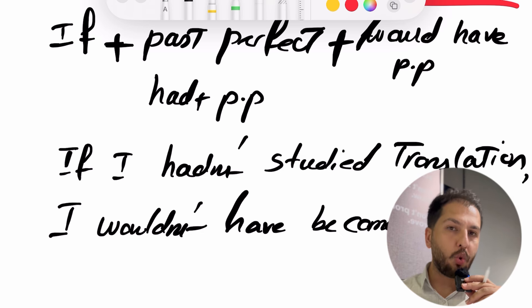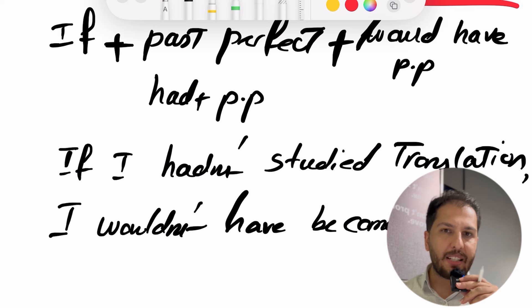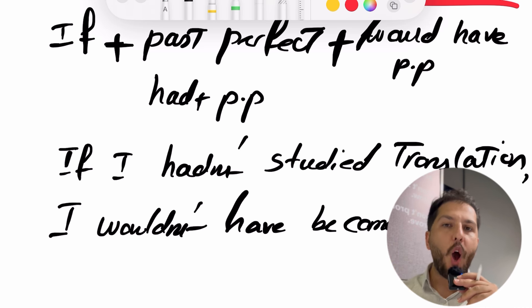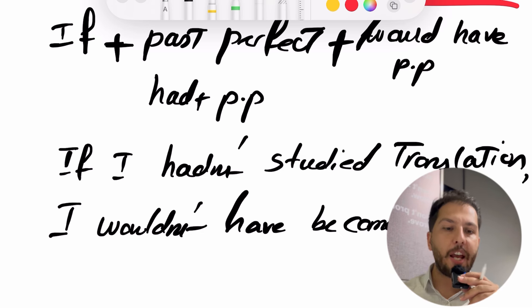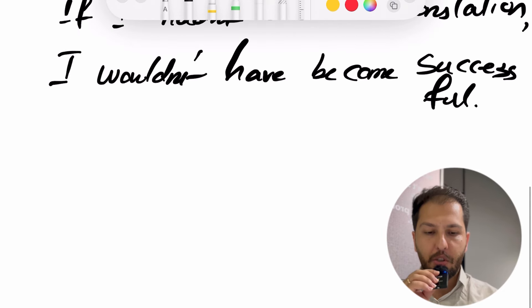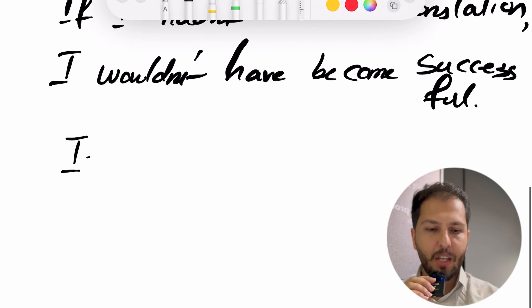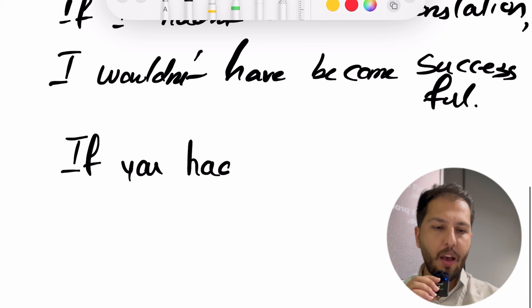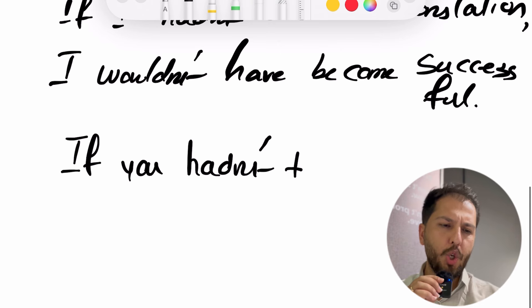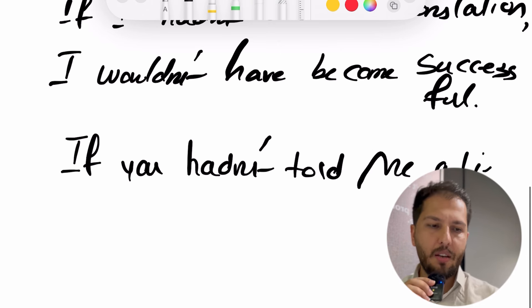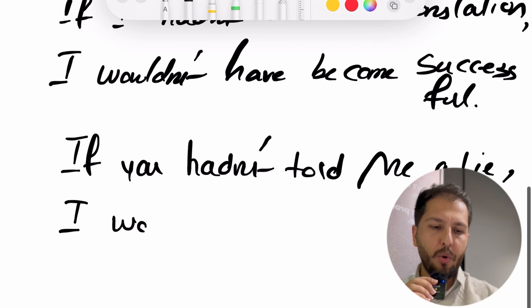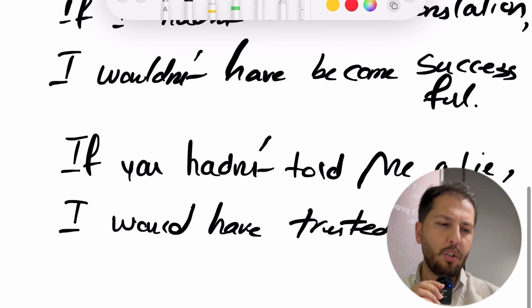مثال دیگه: اگر بار اول به هم دروغ نگفته بودی، بیشتر بهت اعتماد می‌کردم. If you hadn't told me a lie, I would have trusted you more. If you hadn't told me a lie, I would have trusted you more.